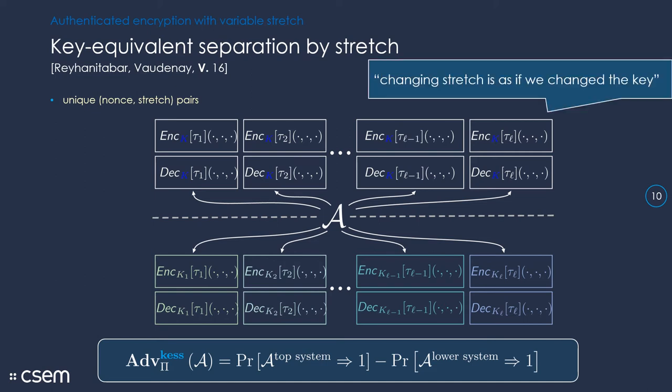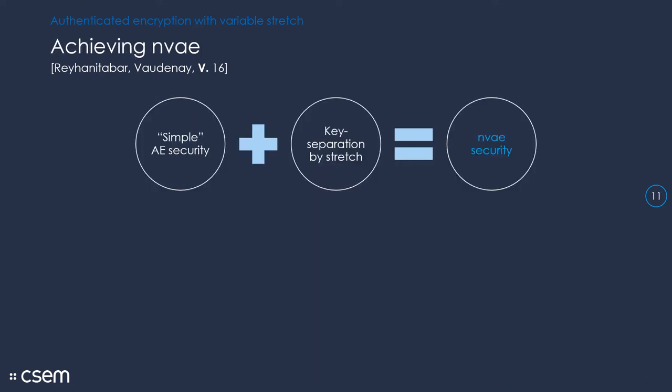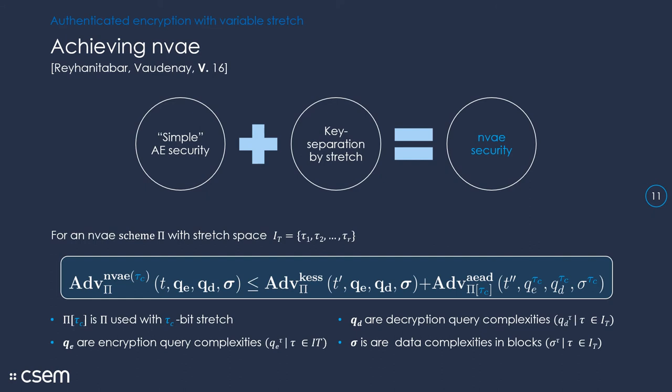So, in other words, changing the stretch has the same effect as if we change the key. And then the main interesting result that we have proven is that if an AE scheme has the KISS property and it's also secure in the sense of the simple AEAD security, this implies NVAE security. So, this is how it looks stated formally.